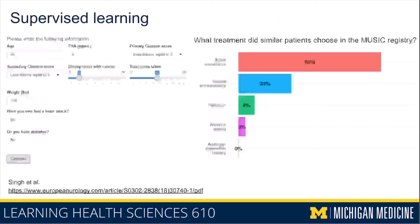To operationalize that, you could make this tool available to patients. This is a tool developed using data from a statewide registry in Michigan, where patients can enter information about their age and the characteristics of their prostate cancer and, using a machine learning model, get feedback on what similar patients chose for treatment. For example, a patient who's 66 with a relatively low PSA and a low Gleason score — putting them at lower risk — would have a two-thirds likelihood of being put on active surveillance based on similar patients in the registry.